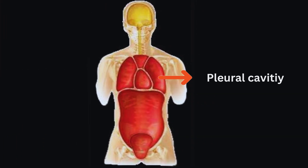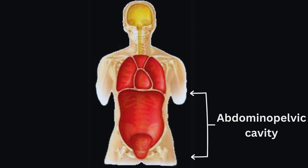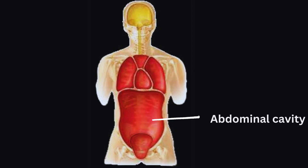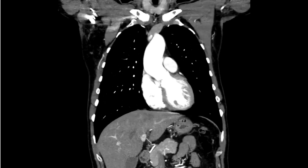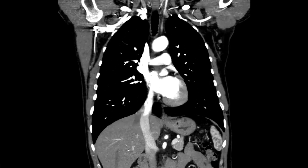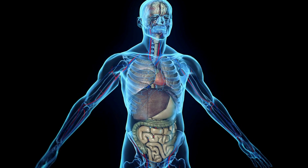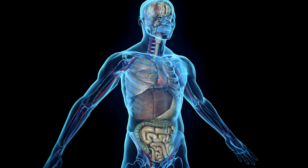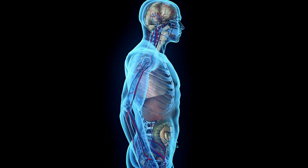The thoracic cavity contains the heart and lungs. The pleural cavities each surround one lung. The pericardial cavity encloses the heart. The abdominopelvic cavity is further divided into the abdominal and pelvic cavities. The abdominal cavity houses organs such as the stomach, liver, and intestines. The pelvic cavity contains the bladder, reproductive organs, and parts of the large intestine.